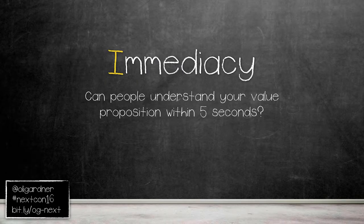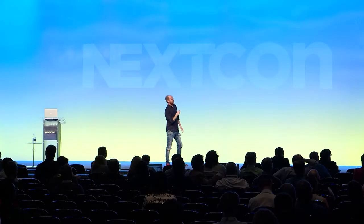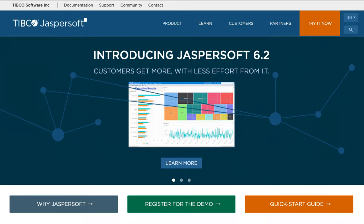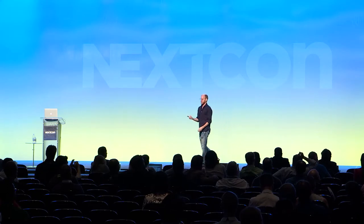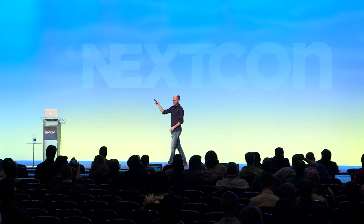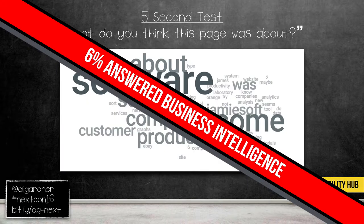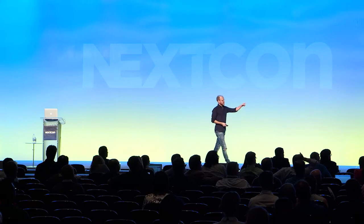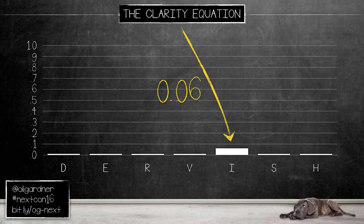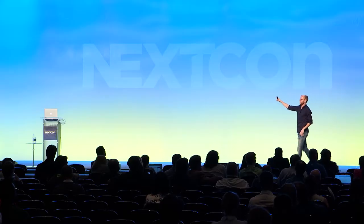Immediacy: can people figure out what you do and care about it within five seconds? I found this on a page and it doesn't really describe what they do, so I ran a five-second test. You show someone a screenshot for five seconds, take it down, ask a question, and see how much they can recall. I asked: what is this page about? Just a bunch of generic answers — only 6% knew it was business intelligence software. 6%! That's terrible. Imagine that was you — only that many people can figure out what you do. Your business is suffering.